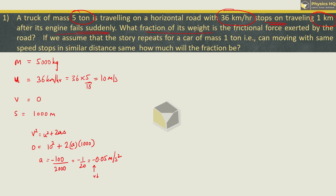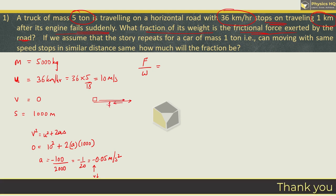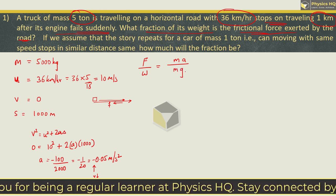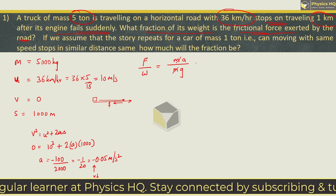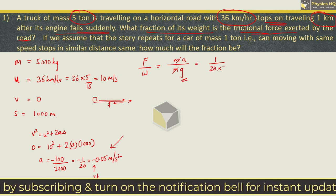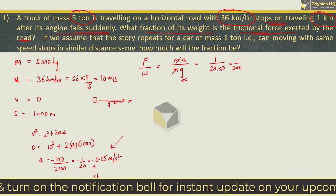Now what we are supposed to find is what fraction of its weight is the frictional force exerted by the road — basically the ratio of force to weight of the vehicle. The frictional force is F = mass × acceleration, and weight = mass × g. Mass cancels, so the ratio = acceleration / g = 0.05 / 10 = 1/200.